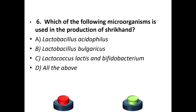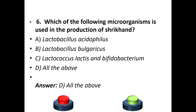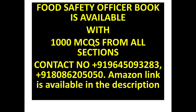Sixth question: which of the following microorganisms is used in the production of shrikhand? A: Lactobacillus acidophilus. B: Lactobacillus bulgaricus. C: Lactobacillus lactis and Bifidobacterium. D: All of the above. The answer is option D — all of the above.